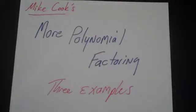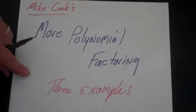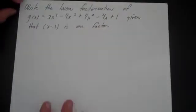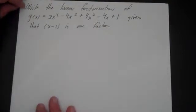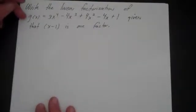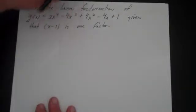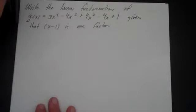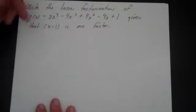Alright, let's look at some more polynomial factoring problems. In this video let's look at three specific examples. In the first example we want to look at is write the linear factorization — sometimes it's called write the complete linear factorization — of g(x) = 3x⁴ - 4x³ + 4x² - 4x + 1, given that x minus 1 is one factor.